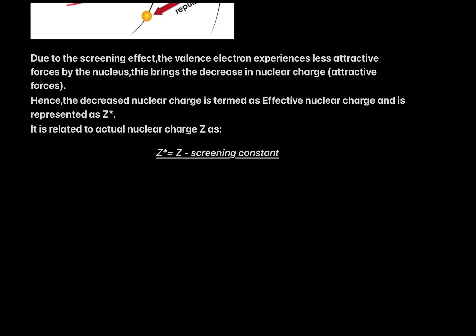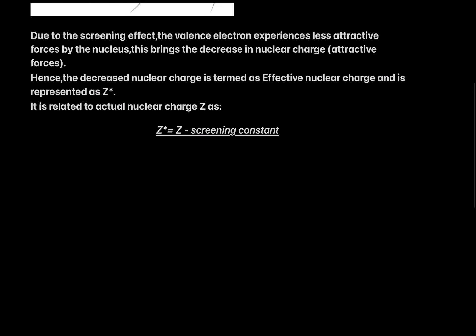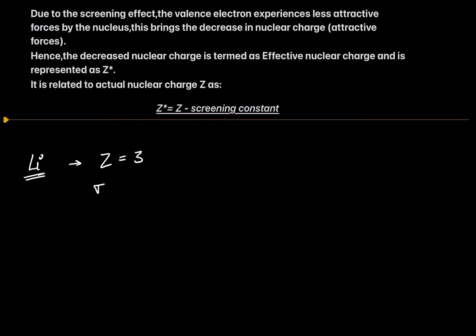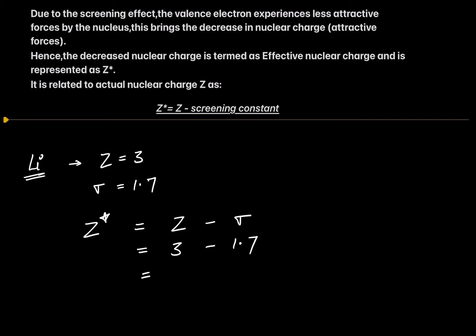In the previous lecture, Slater's rules were used to evaluate the screening constant σ. Let me give some examples. First, lithium: its atomic number is 3, so the actual nuclear charge Z = 3. The screening constant for lithium came out to be 1.7, so the effective nuclear charge Z* = Z − σ = 3 − 1.7 = 1.3. The effective nuclear charge for the outermost electron of lithium is 1.3.